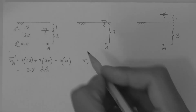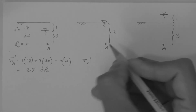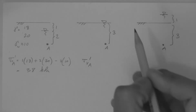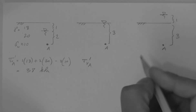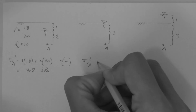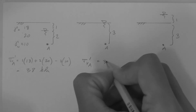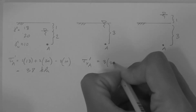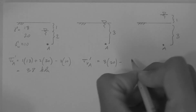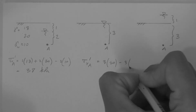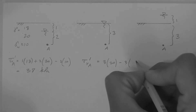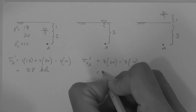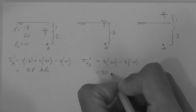The vertical effective stress at point A for the second profile is three meters of saturated soil minus three meters of water. This equals 30 kPa.